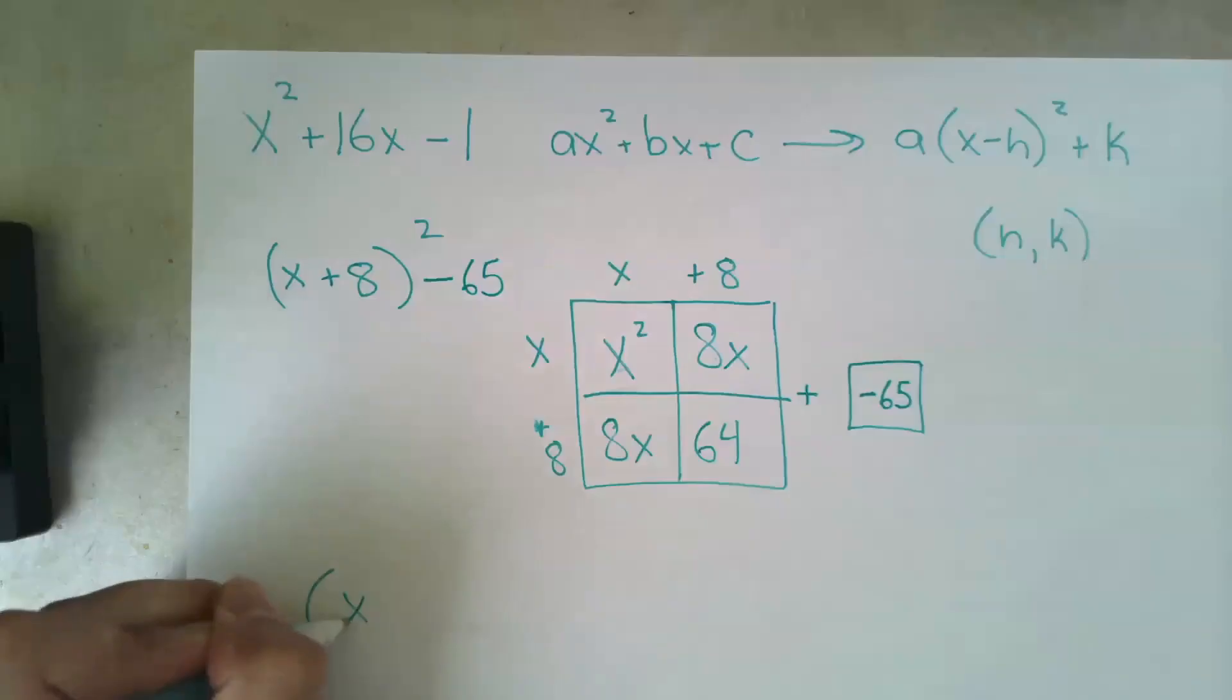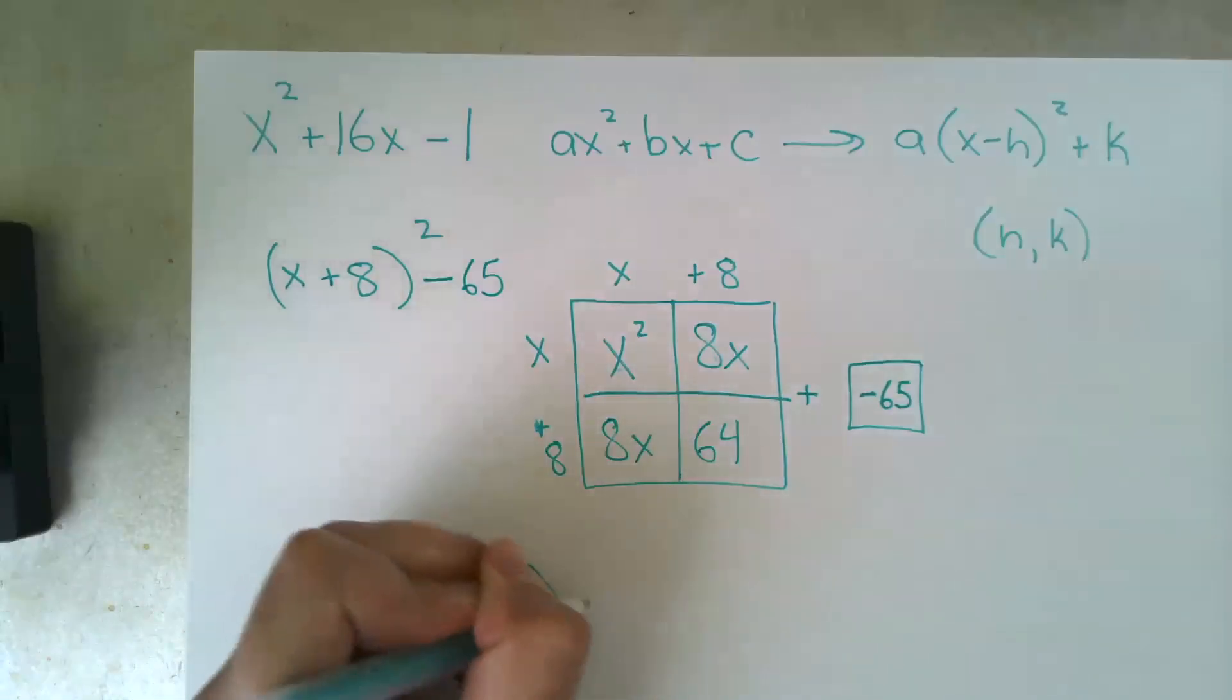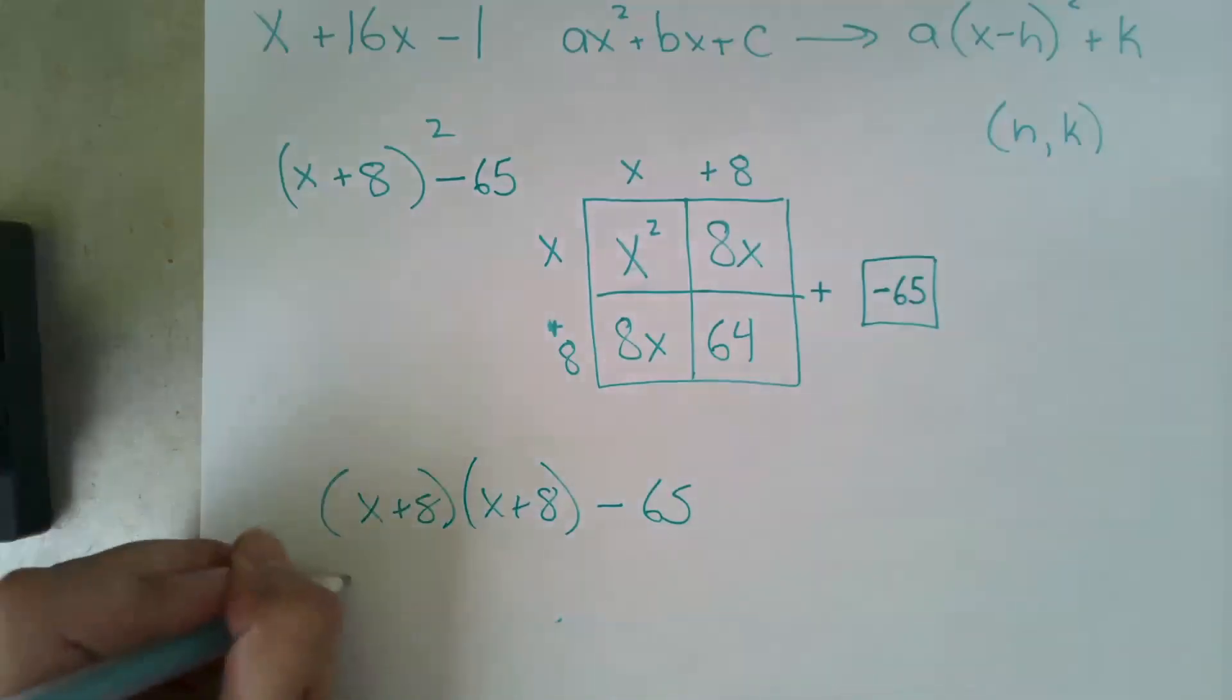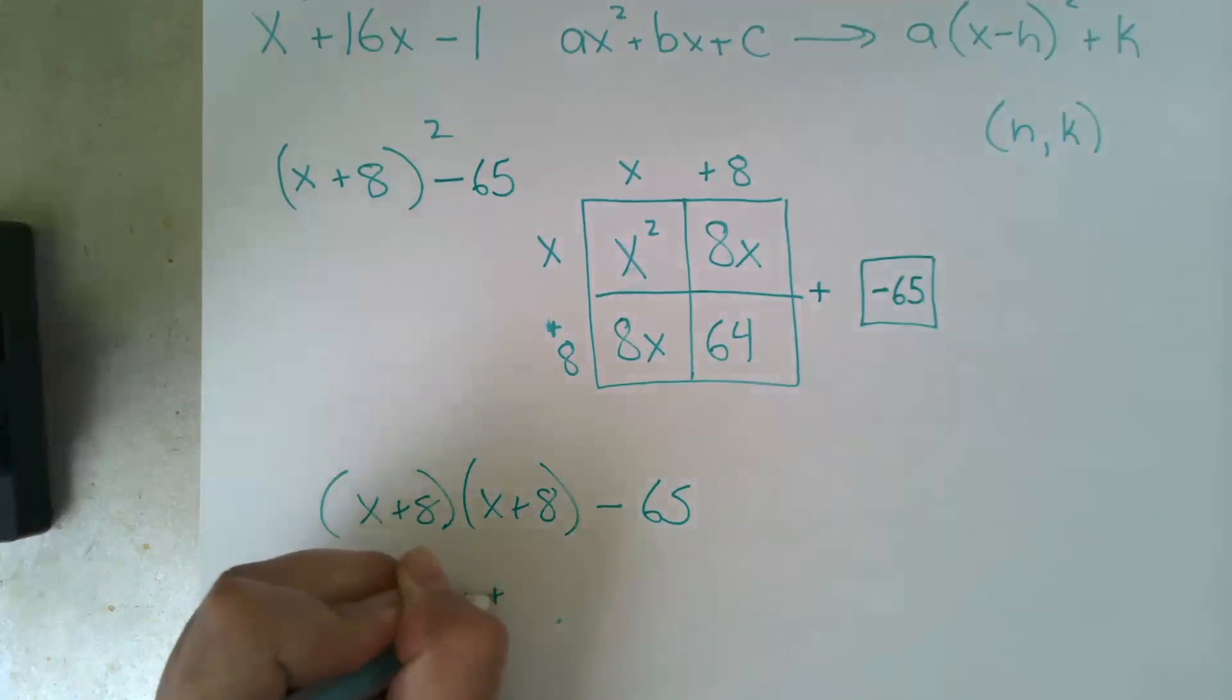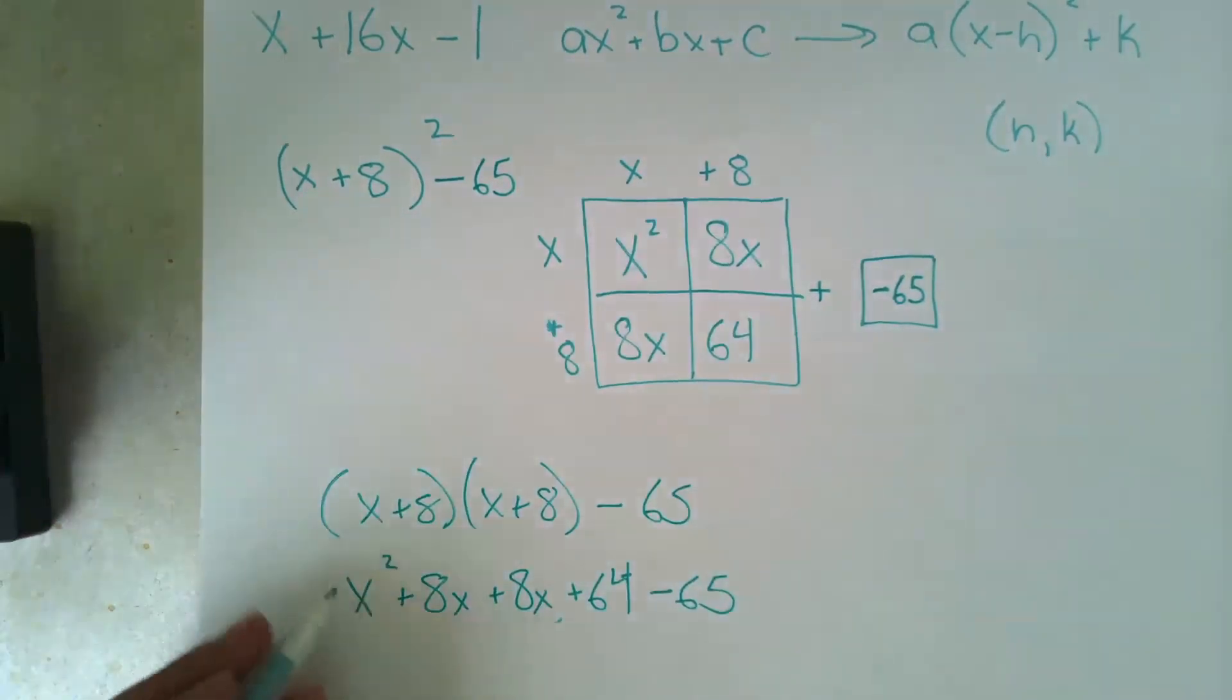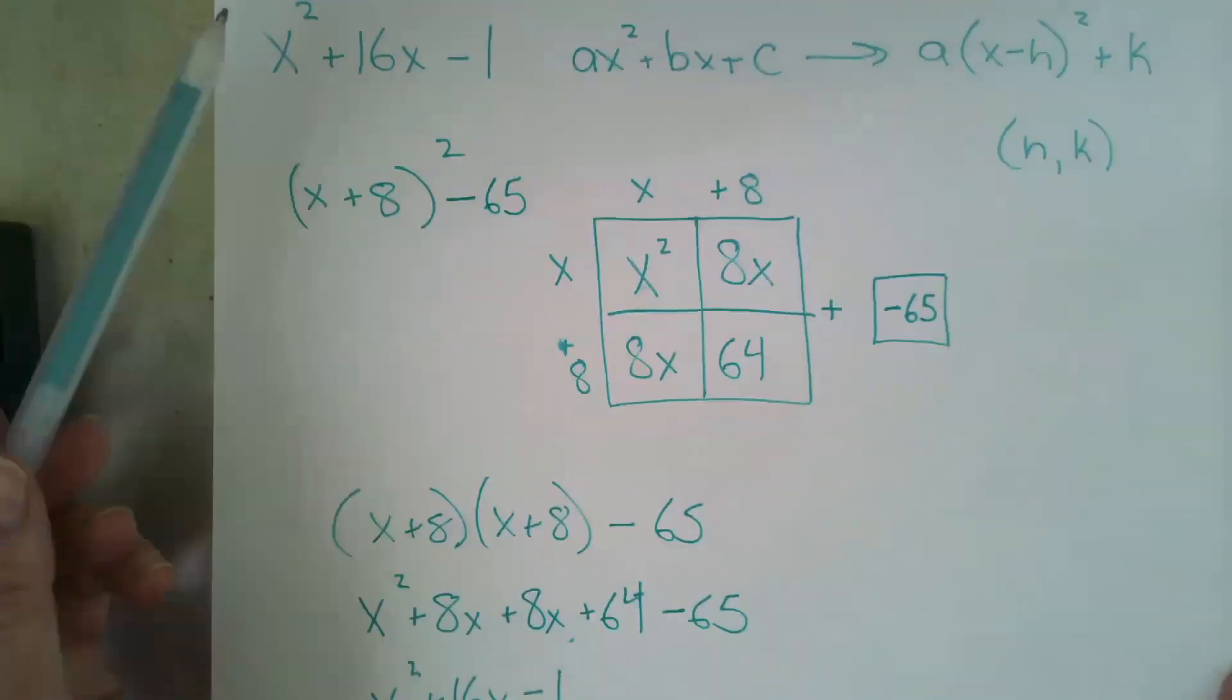Let's foil this out. x plus 8 times x plus 8 minus 65. Firsts, outsides, insides, lasts. Combine like terms, and we are right back where we started.